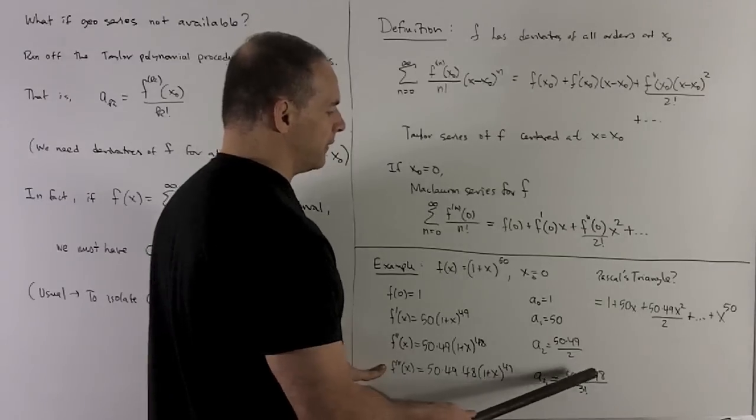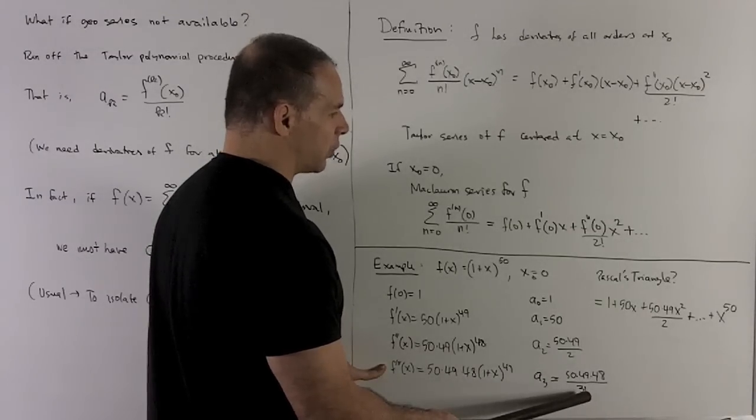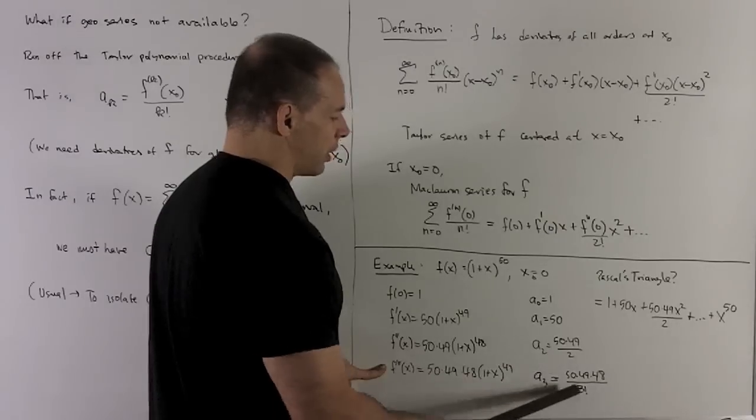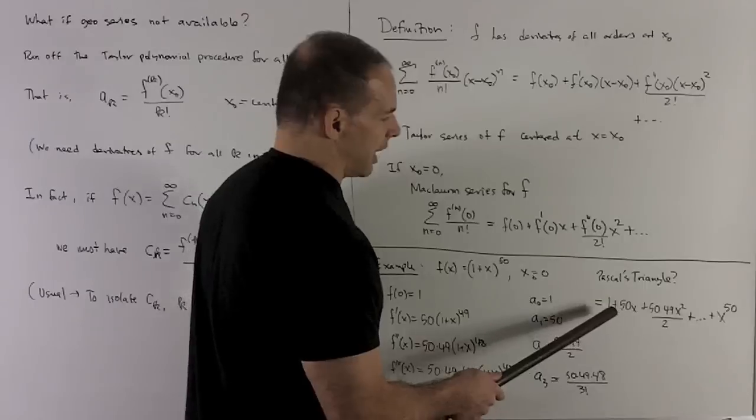Then for the third one, 50, 49, 48, and we divide by 3 factorial. So that's going to give us our third one. And then I just load them into the series as so.